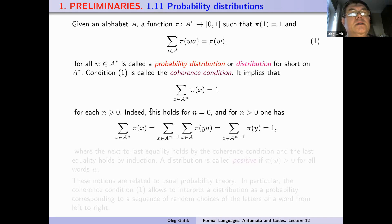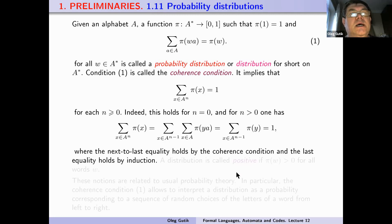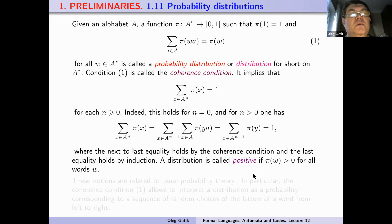Indeed, this holds for n equal to zero. For n greater than zero, this sum equals the sum of p(ay) where y belongs to the subset of the free monoid of words of length n minus one. This equals the sum of p(y) over words of length n minus one, where the second-to-last equality holds by the coherence condition and the last equality holds by induction.